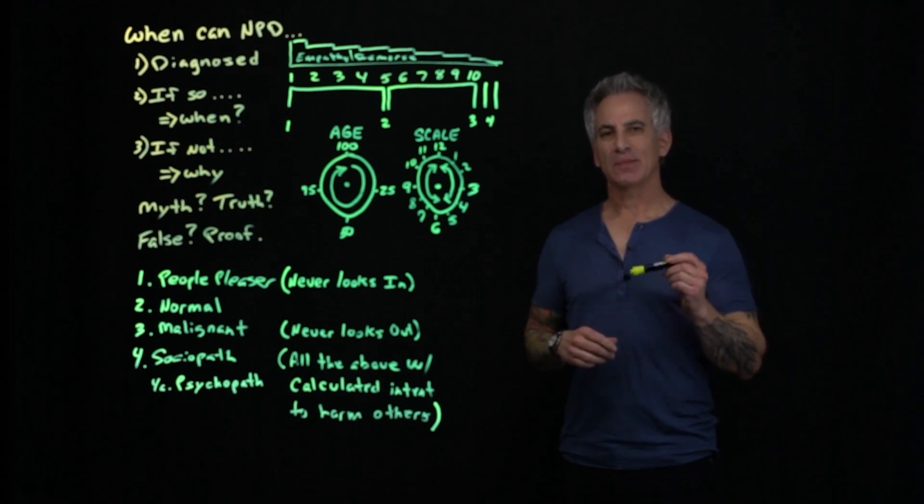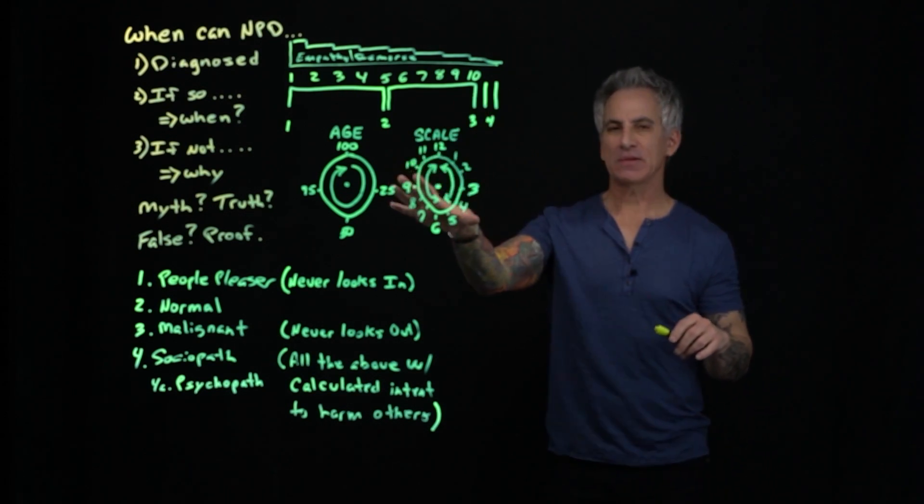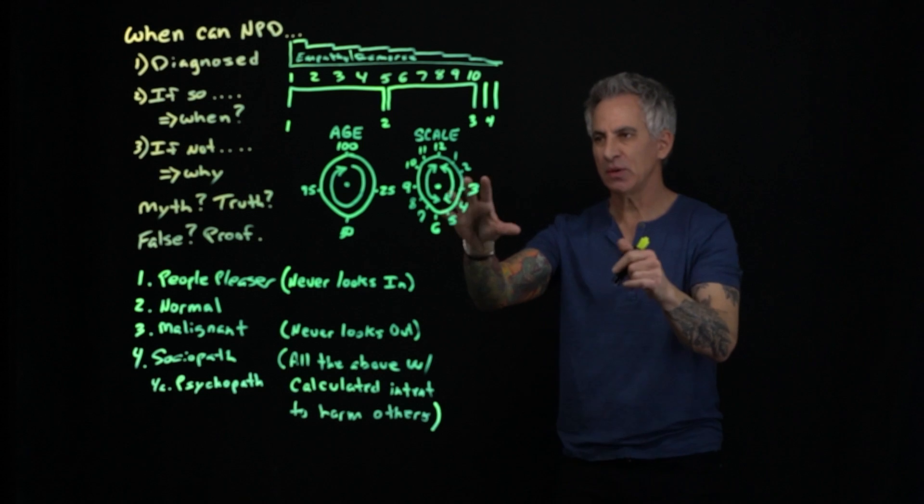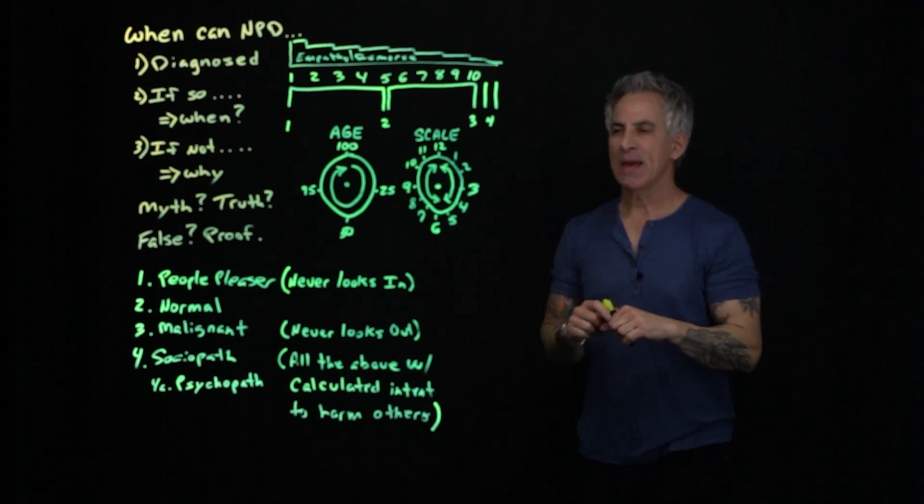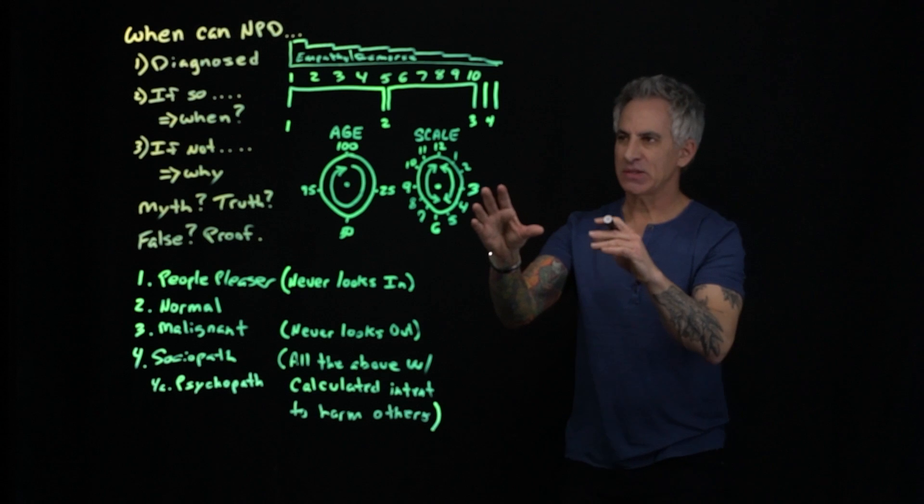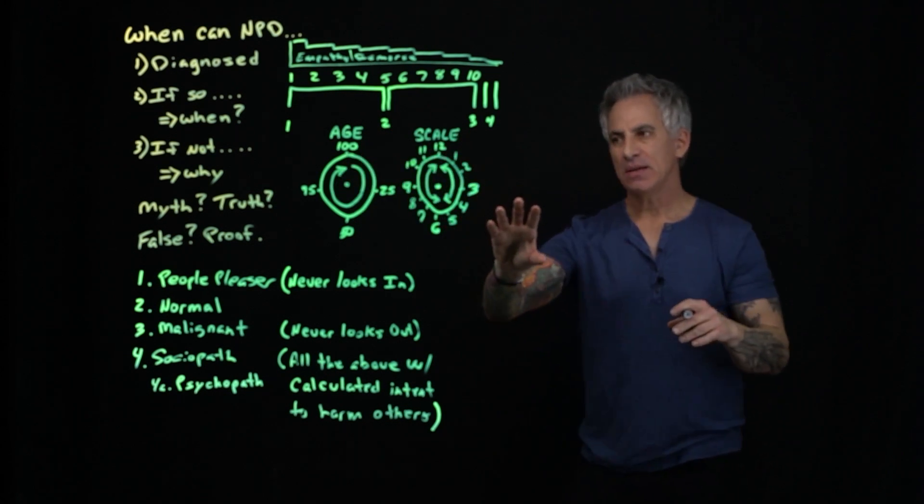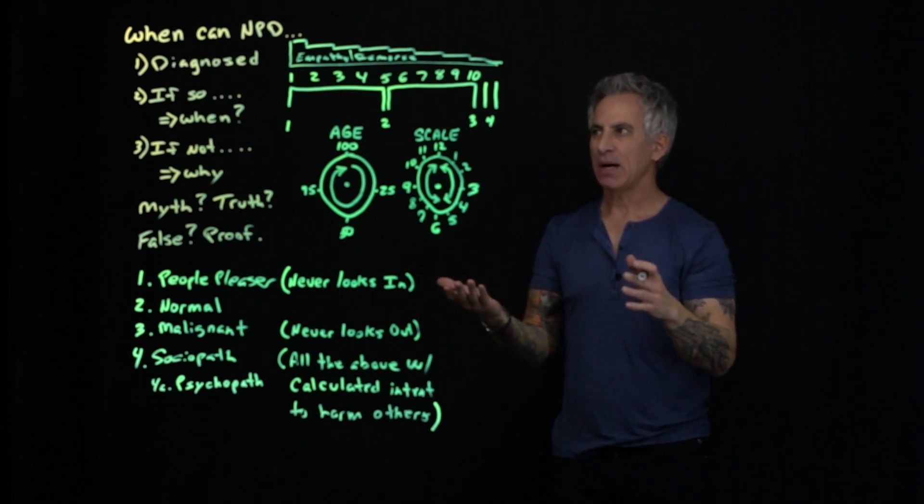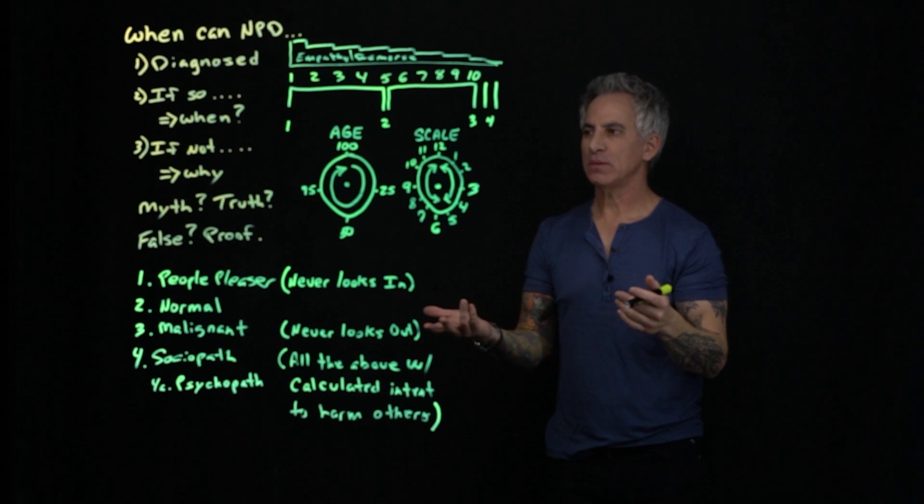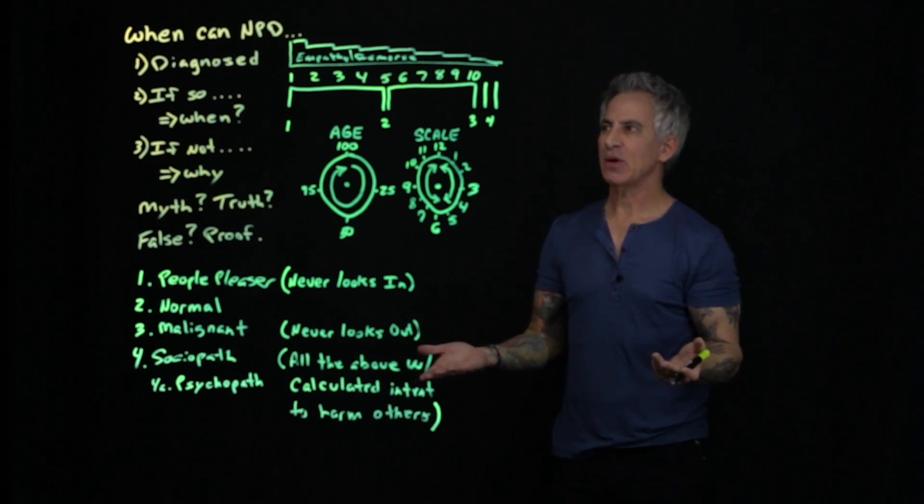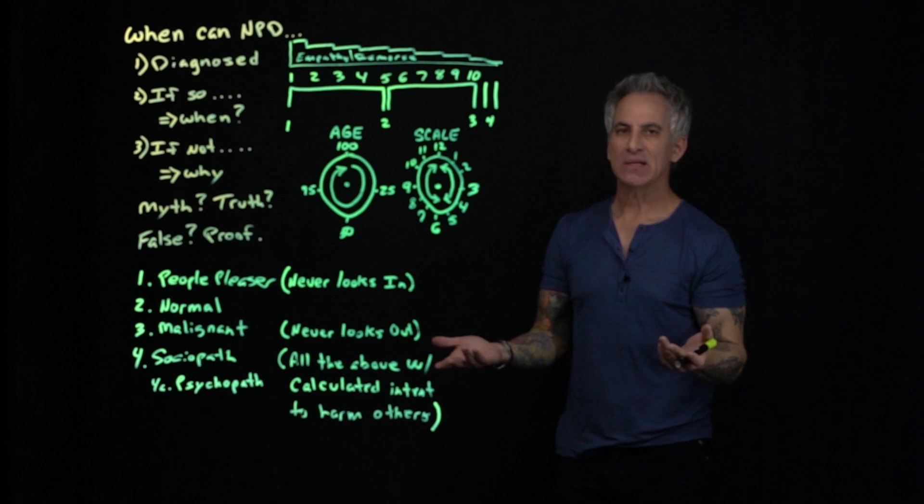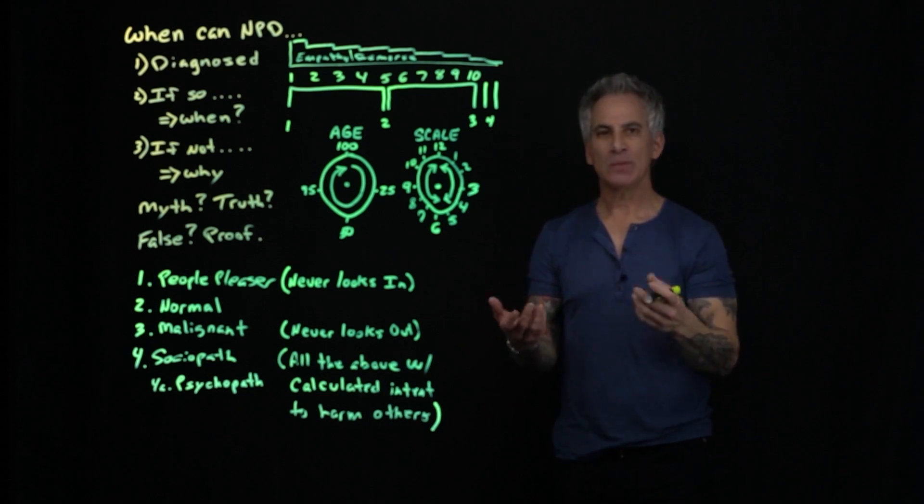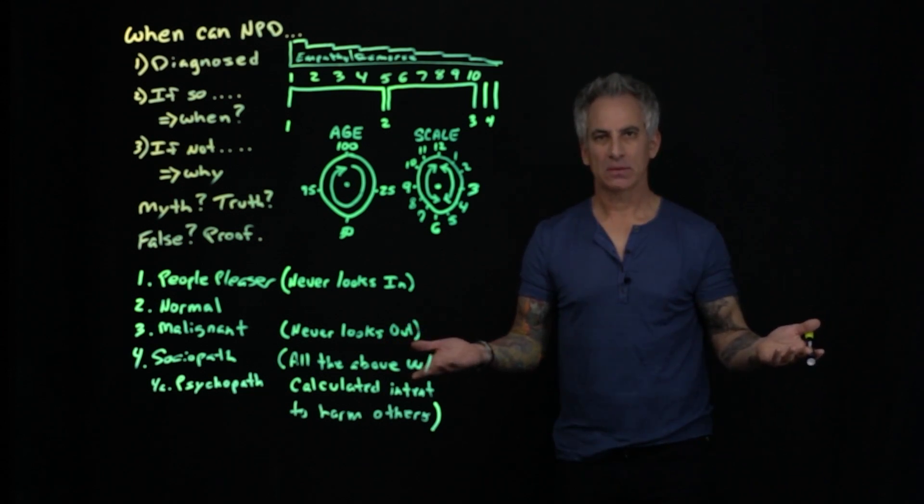Hi, this is Marty, and welcome back for part two. As you can see, the only difference between part one and part two is right here. What you have here is you have age and you have a scale. The important thing to remember about the scale—when can narcissistic personality disorder, as a noun, be diagnosed and pinned on an individual? That would be never, never, never.